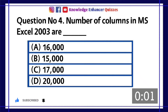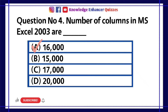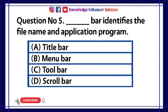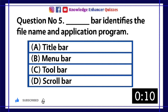Option A is the right answer. Question number 5: Dash bar identifies the file name and application program — A. Title bar, B. Menu bar, C. Toolbar, D. Scroll bar.